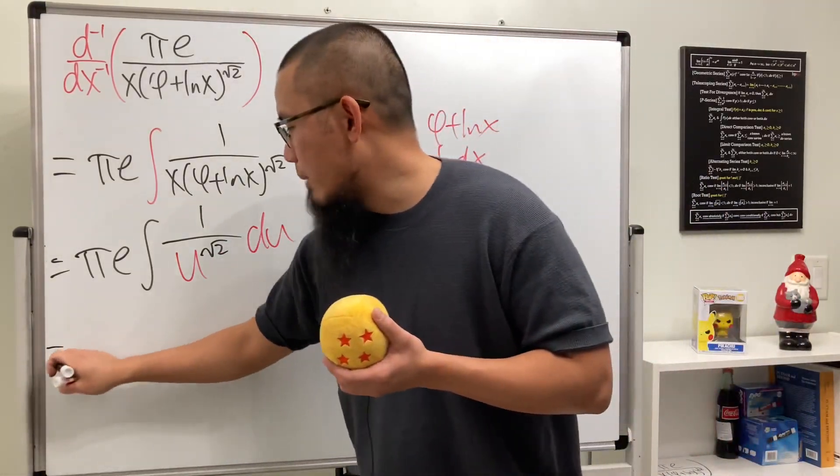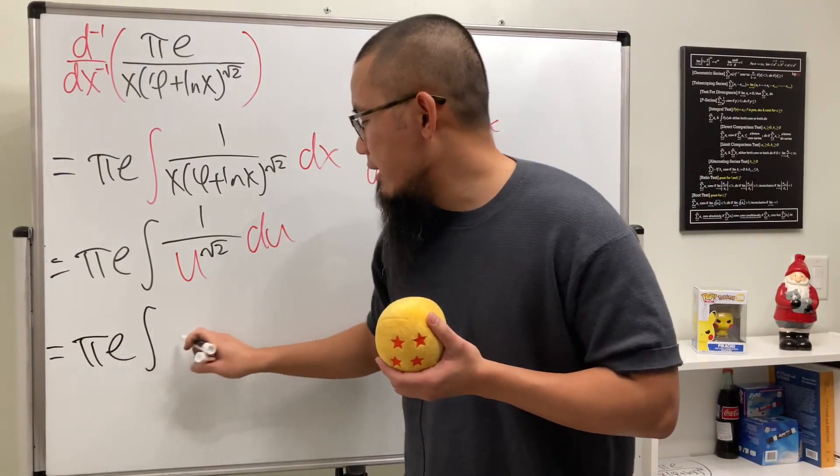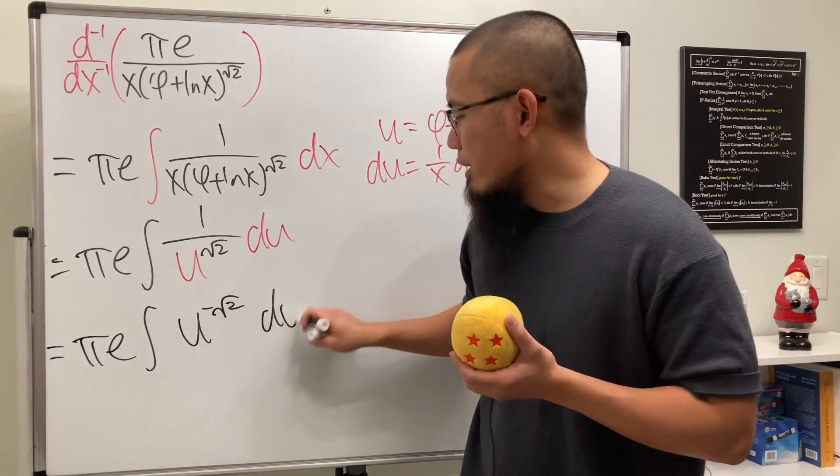And then now we can just integrate this, but we have to first write this down as the integral of u raised to a negative square root of 2 power, and then right here.